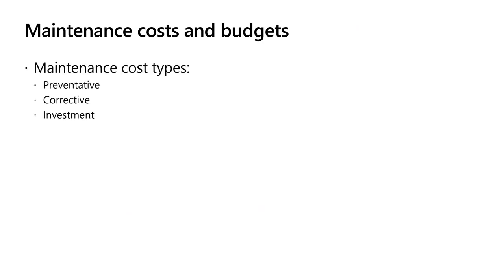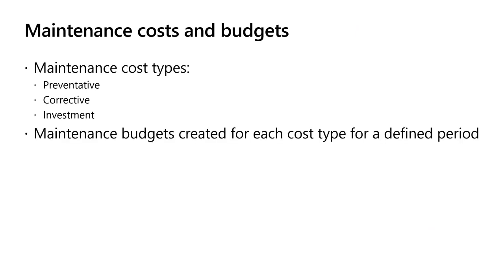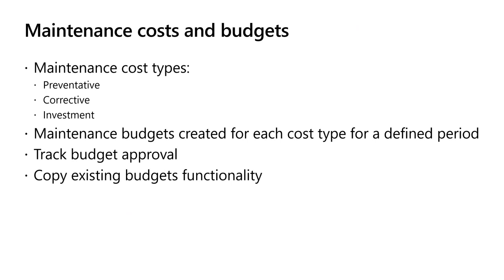We also have the ability with maintenance to break down the types of costs and create budgets for them. Our maintenance cost types in the system are preventative, corrective, and investment — those are the three ways we can categorize our maintenance costs. For each cost type, we can create a budget for that cost in the period to set a benchmark for our expected maintenance costs. We have the ability to track the approval of the budget and a function that allows us to copy the existing budget to a new period for basic budget management.